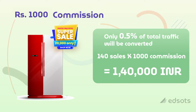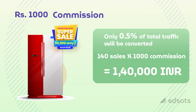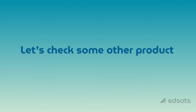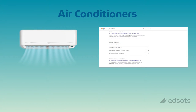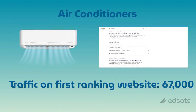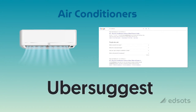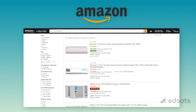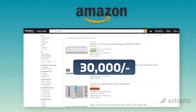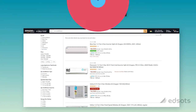For example, we have already checked for refrigerators, and now we have another product — air conditioners. The first-ranking webpage for air conditioners has traffic of almost 67,000. I have already told you how to check that in the last lecture. On Amazon, the average selling price of an AC is almost 30,000 rupees. Let me show you how to check this.